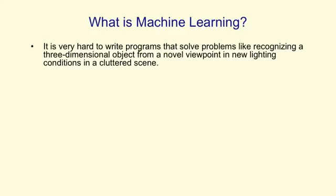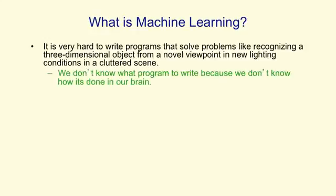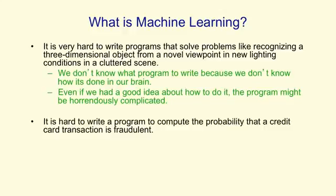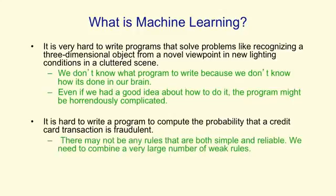The reason we need machine learning is that there are some problems where it's very hard to write the programs. Recognising a three-dimensional object from a novel viewpoint in new lighting conditions in a cluttered scene is very hard to do. We don't know what program to write because we don't know how it's done in our brain. And even if we did, it might be a horrendously complicated program. Another example is detecting a fraudulent credit card transaction, where there may not be any nice simple rules that will tell you it's fraudulent.